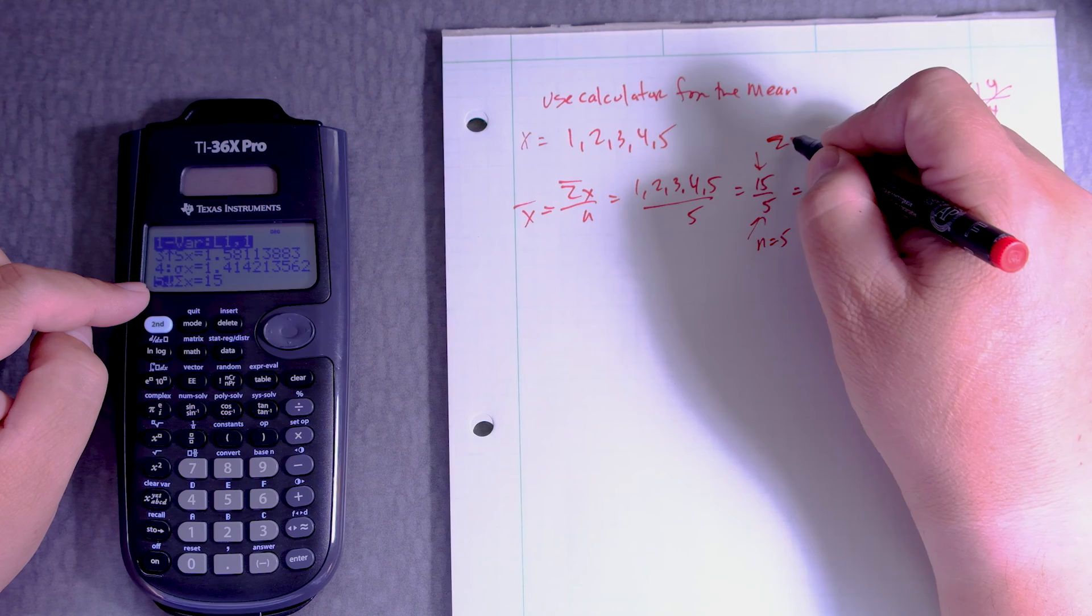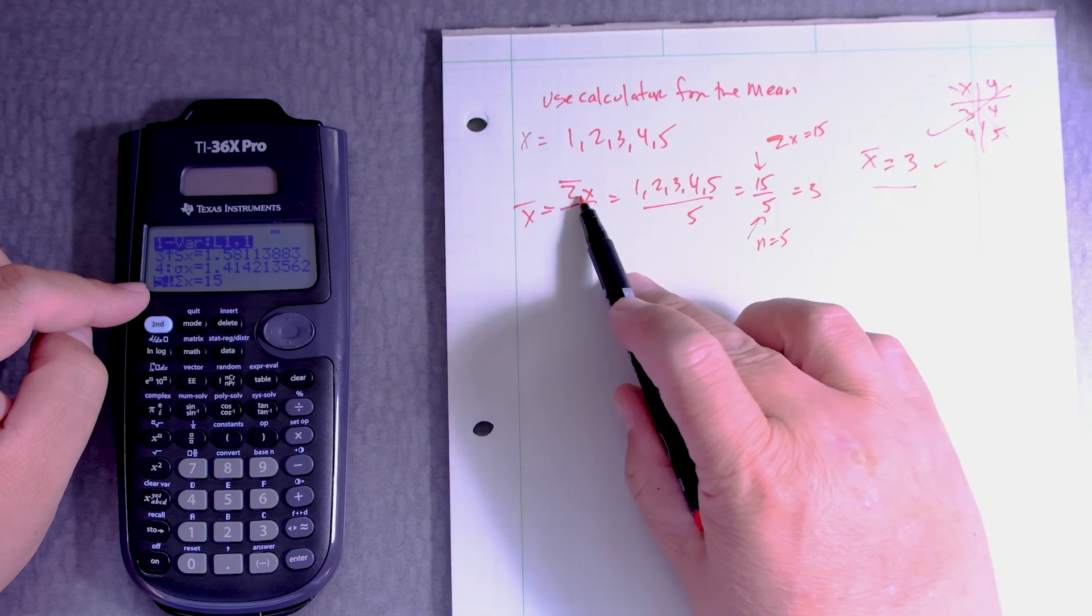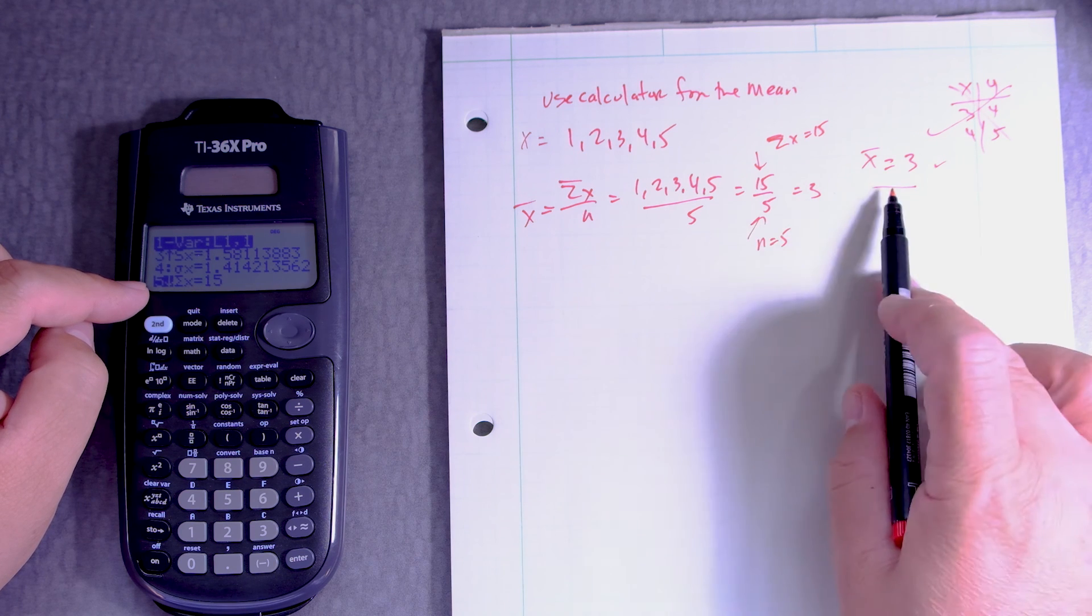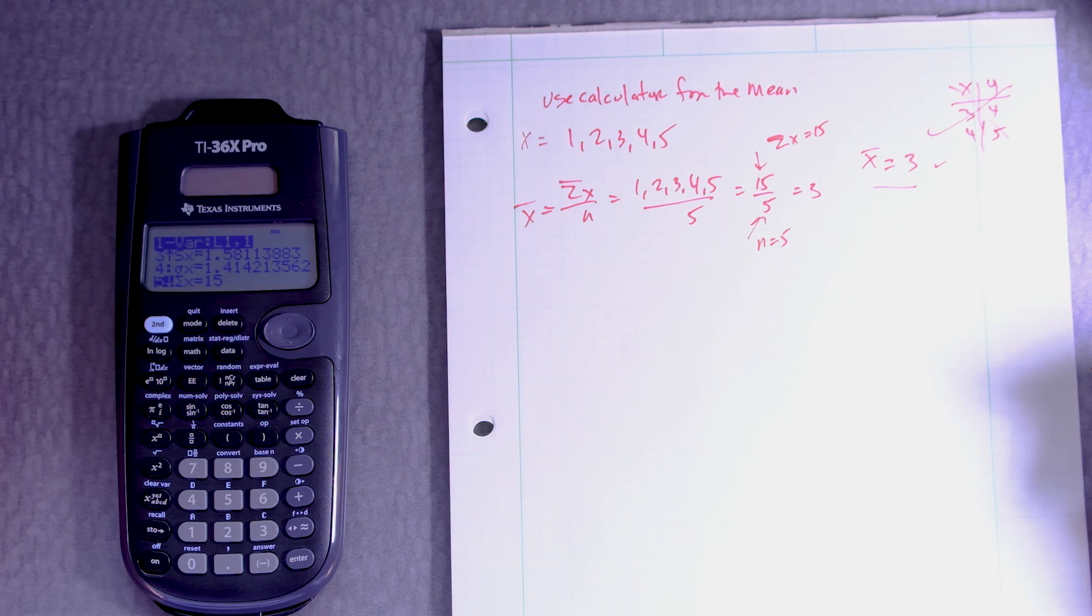That's true. The sum of x is 15, n is 5, and the average is 3. So that's perfect.